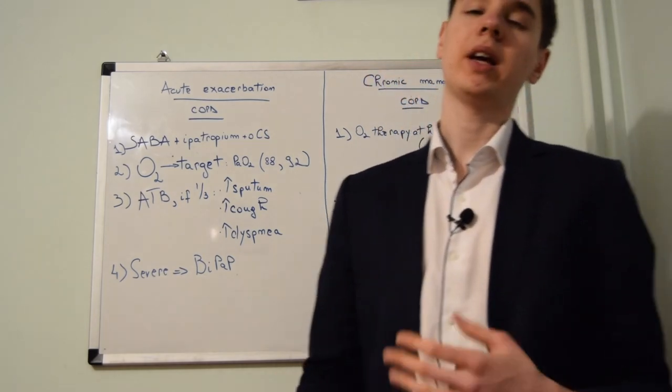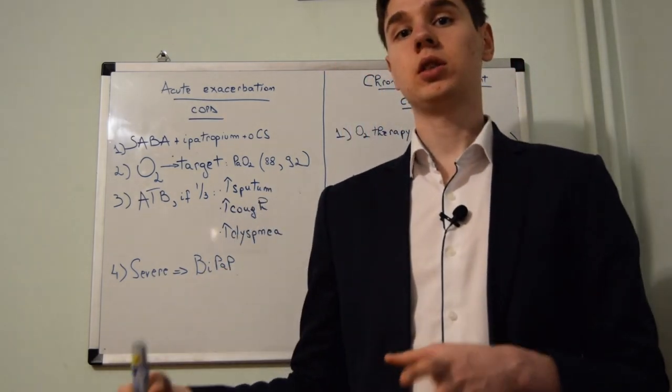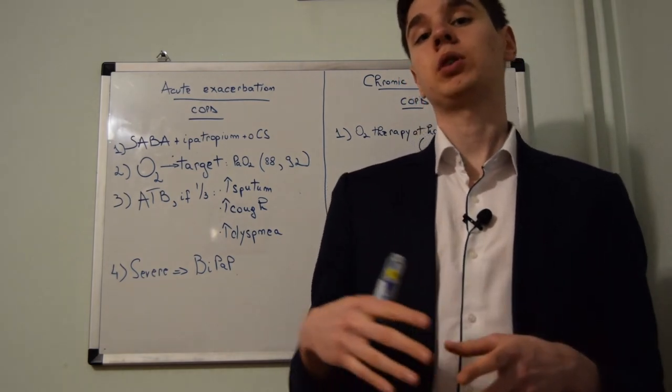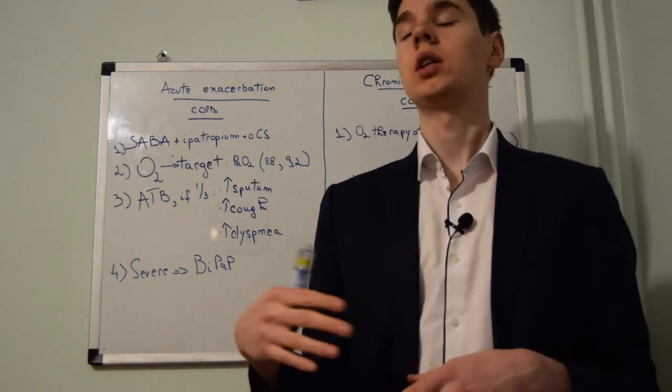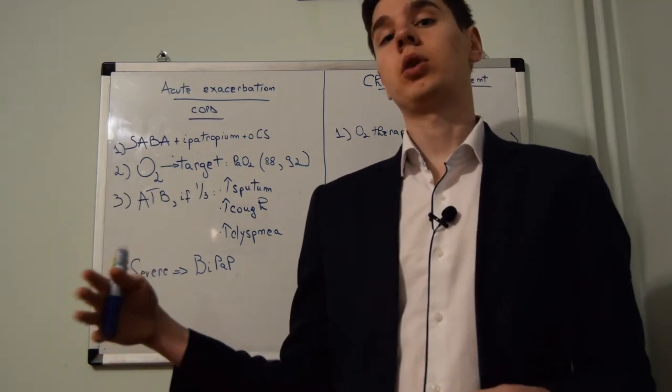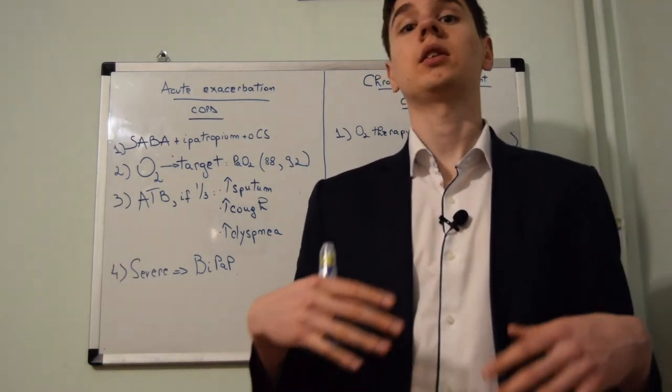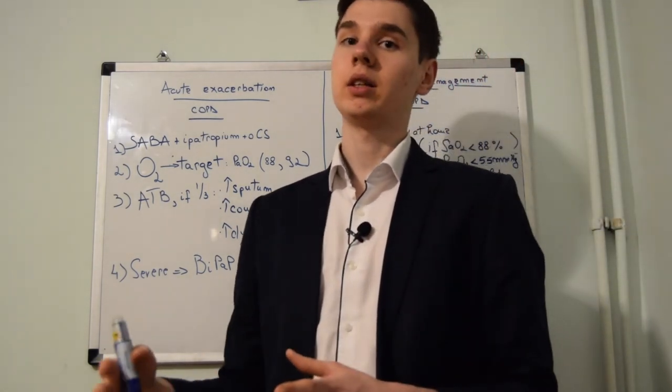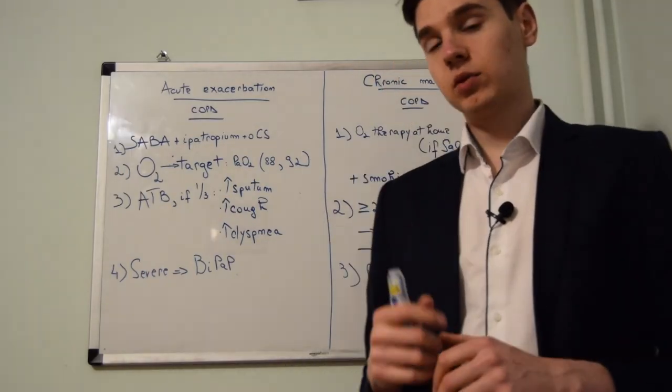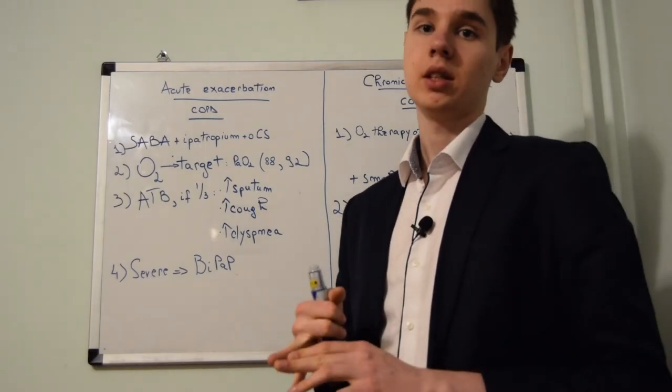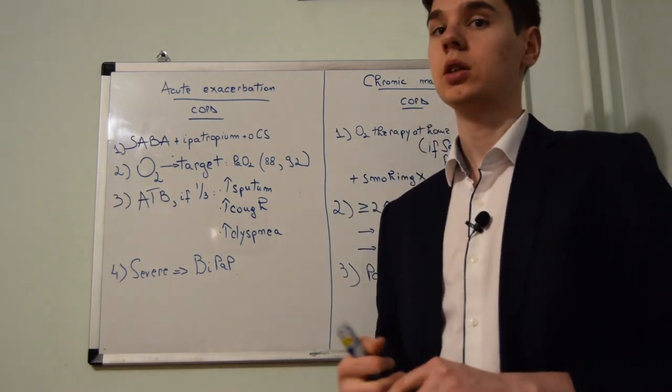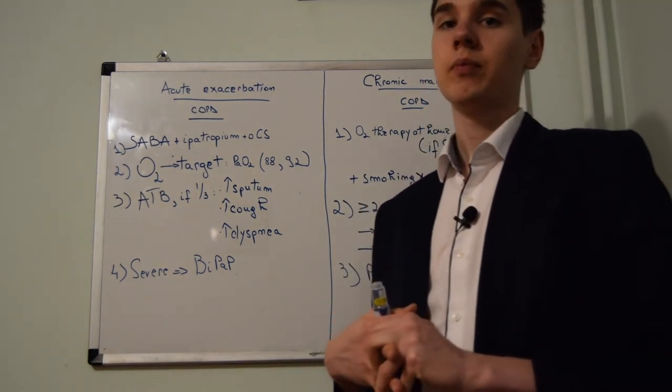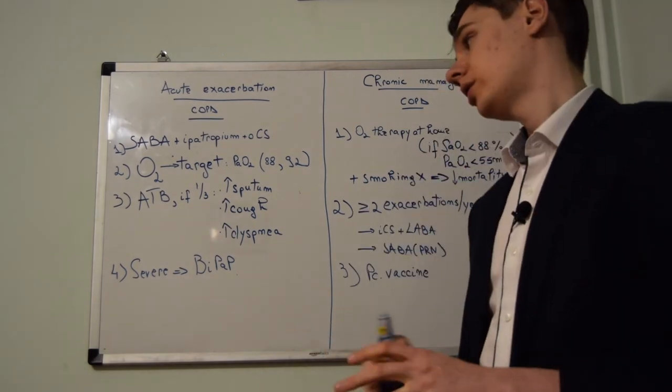This is explained by the fact that COPD patients are dependent upon the partial pressure of oxygen to modulate their respiratory rate. Their partial pressure of carbon dioxide is chronically elevated therefore cannot participate in regulating respiratory rate. If the patient has an increase in frequency or intensity of cough, increase in sputum production, or increased dyspnea, then antibiotics are used.